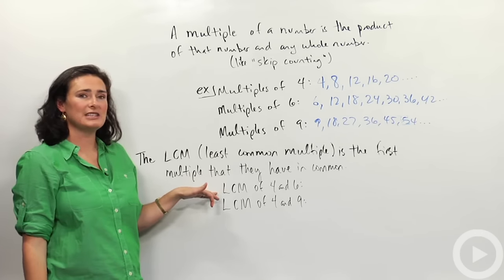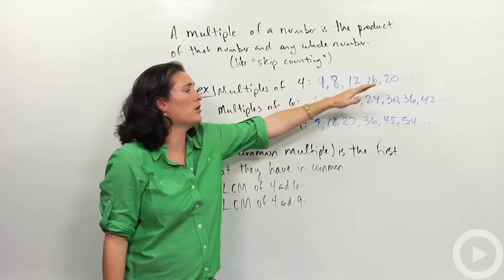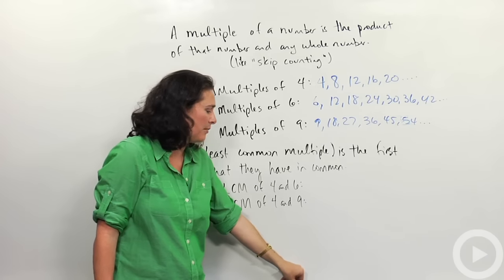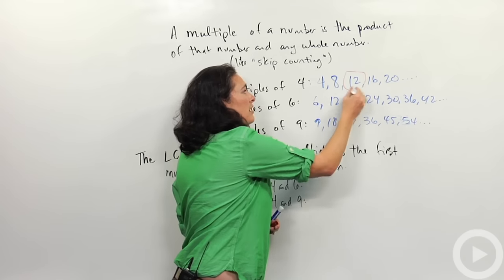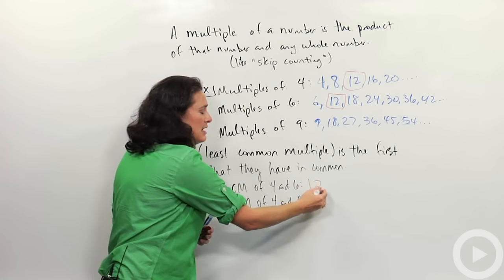So if I wanted to find the least common multiple of 4 and 6, I'd be looking in my 4 row, and looking in my 6 row, and looking for what's the first number they have in common. Well, in this case, the first number they have in common is 12. There's a 12, and there's a 12. So the least common multiple of 4 and 6 is 12.